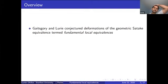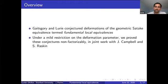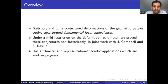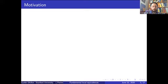A quick overview of what's going to be discussed. A few years ago, Gaitsgory and Lurie formulated some conjectural quantum deformations of the geometric Satake equivalence. Under a mild restriction on the value of the deformation parameter, we proved these conjectures non-factorizably in joint work with Justin Campbell and Sam Raskin. After telling you about the motivation and methods, I'll sketch some arithmetic and representation theoretic variants or applications, which are work in progress.